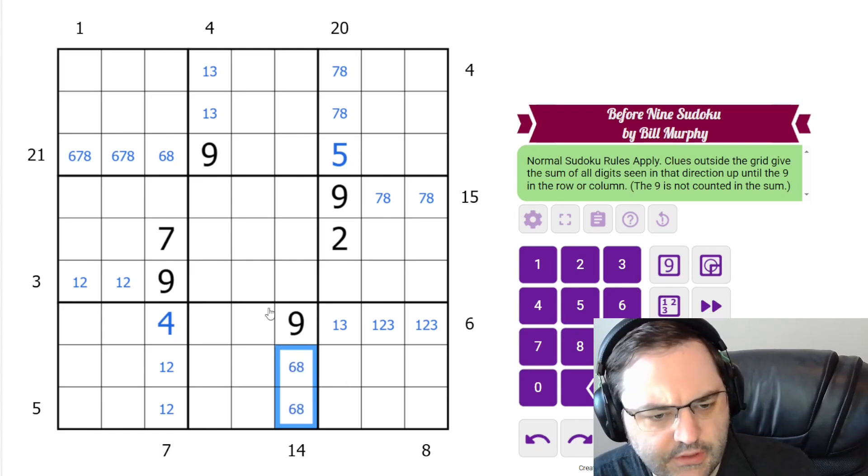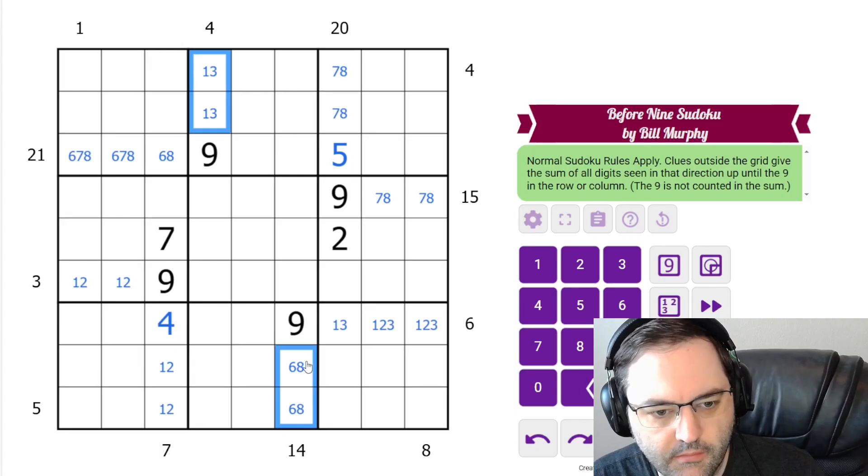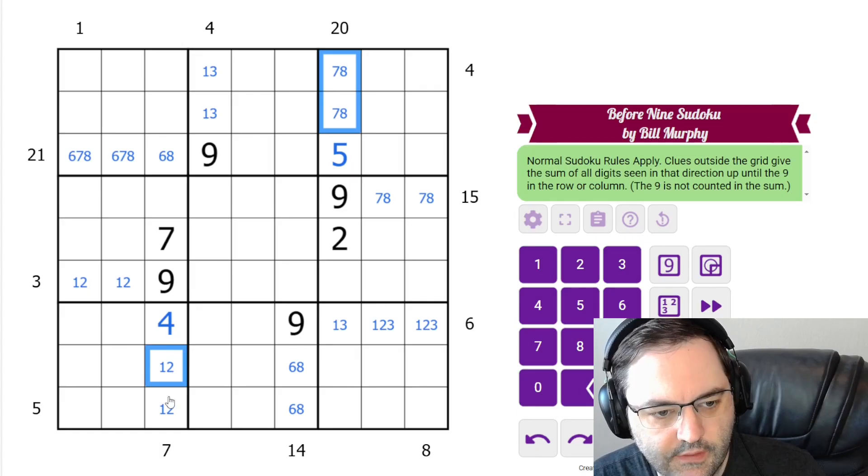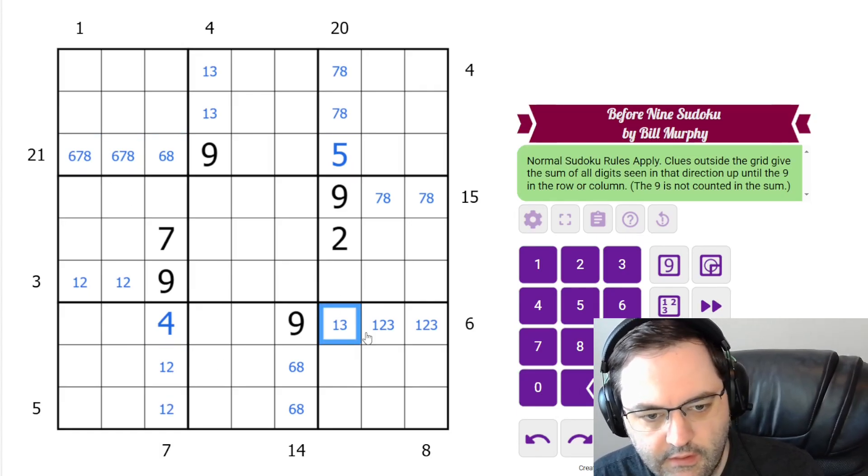So you can see the symmetry in the types of clues here. The 6, 8, the 1, 3. The 1, 2, the 7, 8. 7, 8, 1, 2 again. 6, 7, 8, 1, 2, 3.